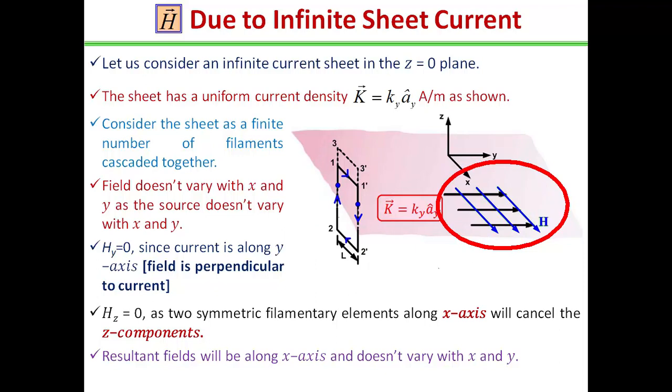As given in the figure, consider the sheet as the finite number of filaments cascaded together. In the figure, it is given by black and blue color. Here, field does not vary with x and y, as source does not vary with x and y. Hence, H_y will be 0, since the current is along y-axis.